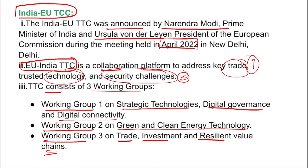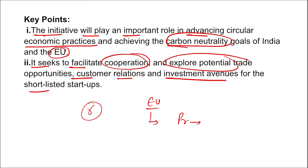Regarding the European Union: the President of the European Council is Charles Michel, the President of the European Commission is Ursula von der Leyen, the headquarters of the EU is in Brussels, Belgium. There are 27 members in the European Union, and it was established in 1993.